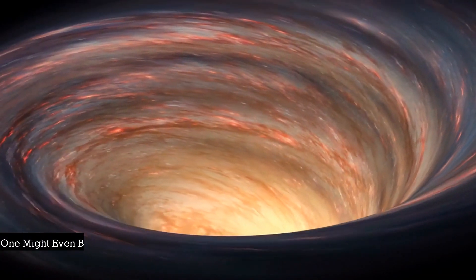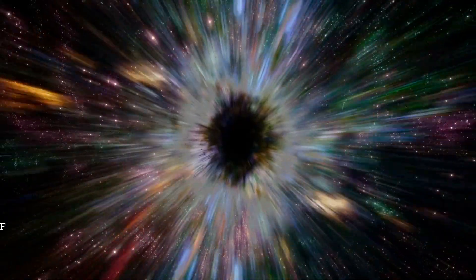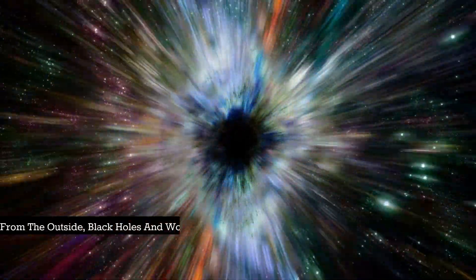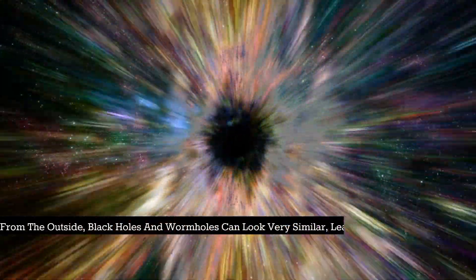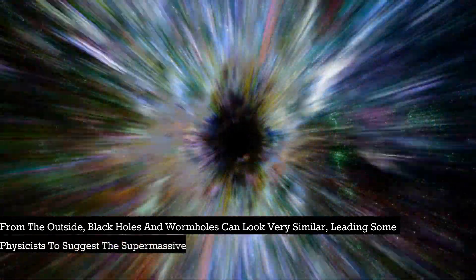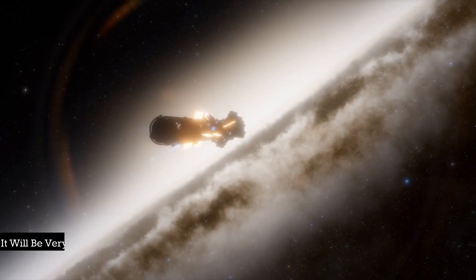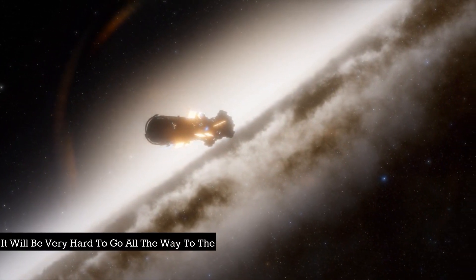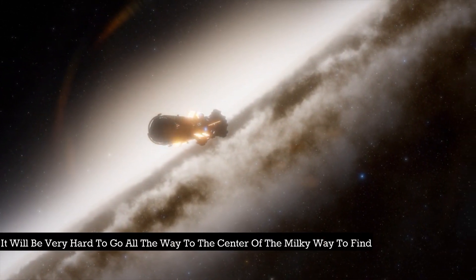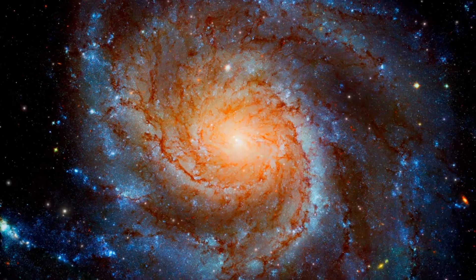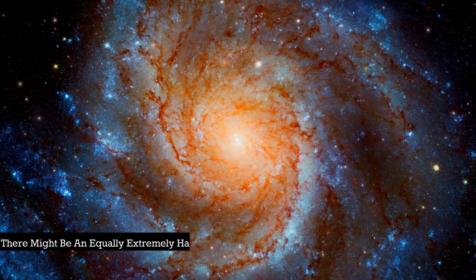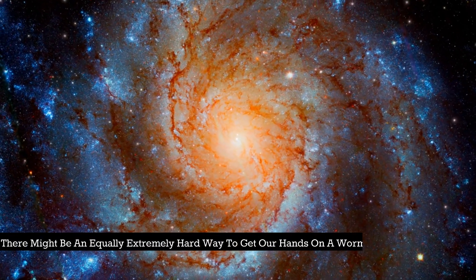One might even be closer than we realize. From the outside, black holes and wormholes can look very similar, leading some physicists to suggest the supermassive black holes in the center of galaxies are wormholes. It will be very hard to go all the way to the center of the Milky Way to find out though. But that's okay - there might be an equally extremely hard way to get our hands on a wormhole. We could try to make one.